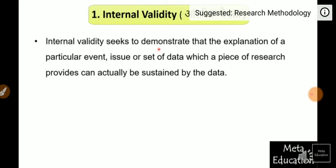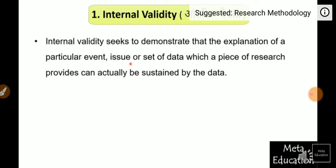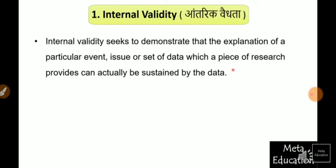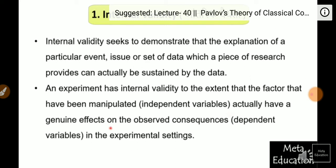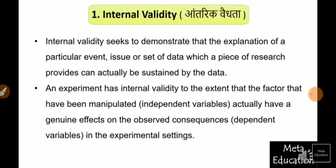Internal validity seeks to demonstrate that the explanation of a particular event, issue, or set of data which a piece of research provides can actually be sustained by the data. An experiment has internal validity to the extent that the factors that have been manipulated — the independent variables — actually have a genuine effect on the observed consequences of dependent variables in the experimental settings.